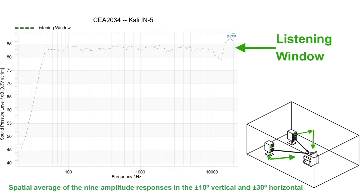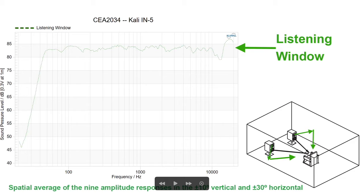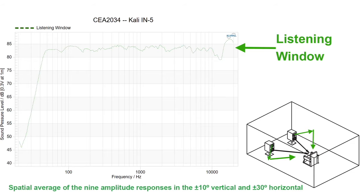The second line in the SpinOrama is known as the listening window, shown in green. It is a combination of the on-axis sound and the plus-or-minus 30-degree horizontal window — going off-axis to the side — as well as the plus-or-minus 10-degree window, going 10 degrees above or below the reference plane of the speaker.